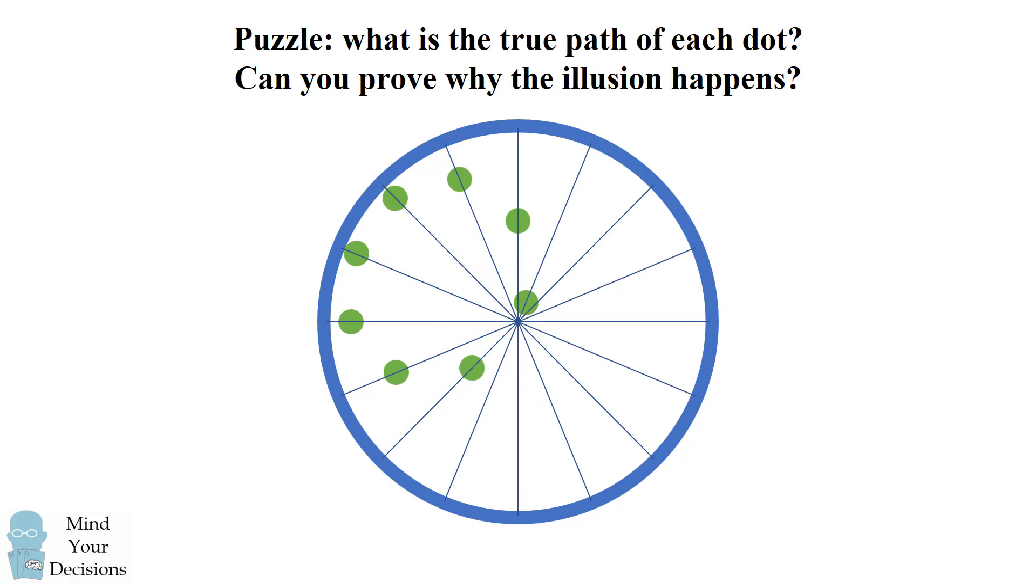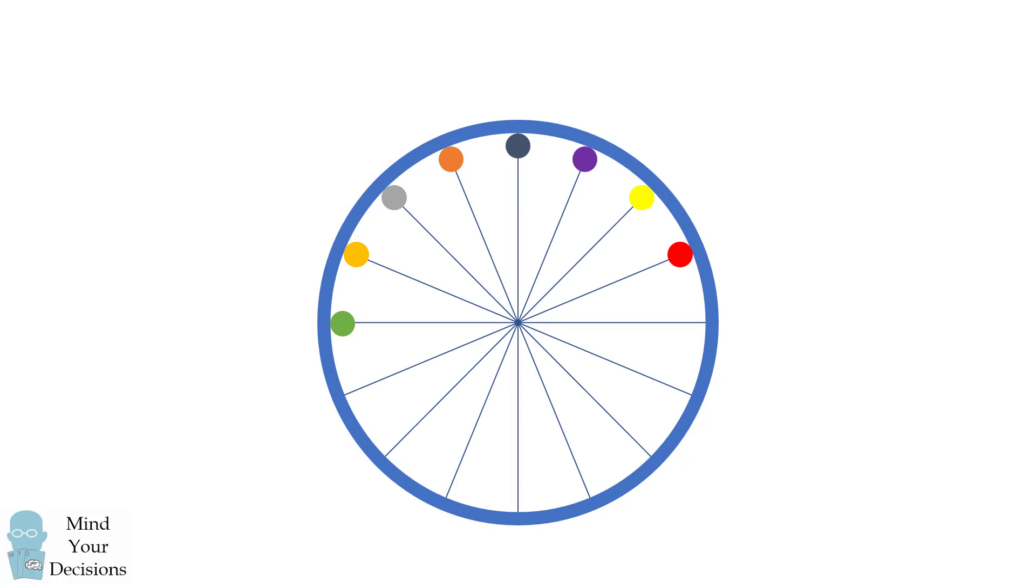Let me present this to you in another way so that it's easier to follow. I'll give each dot a different color, and now I will set the dots along straight line segments going back and forth.